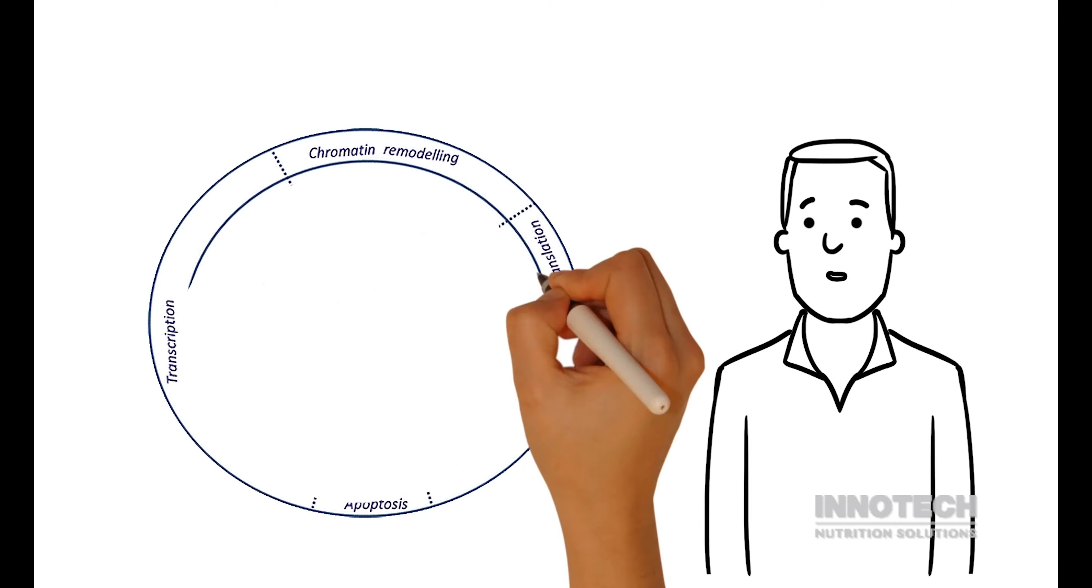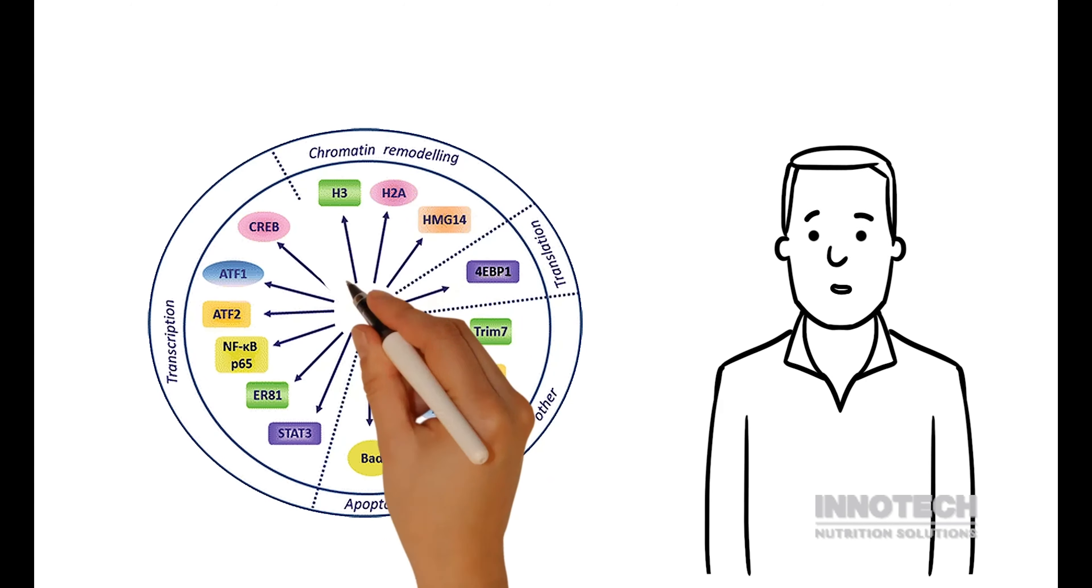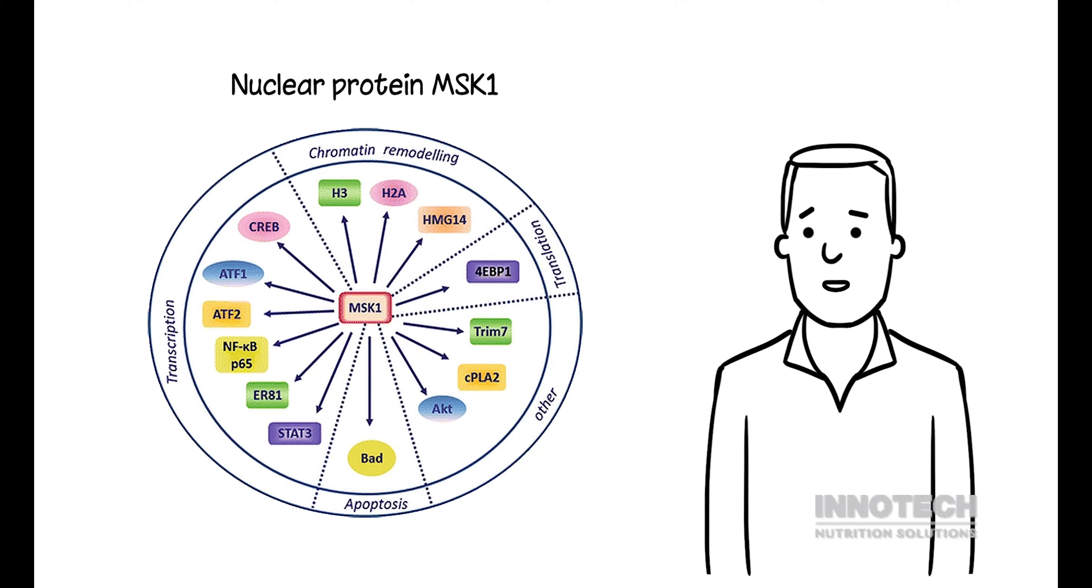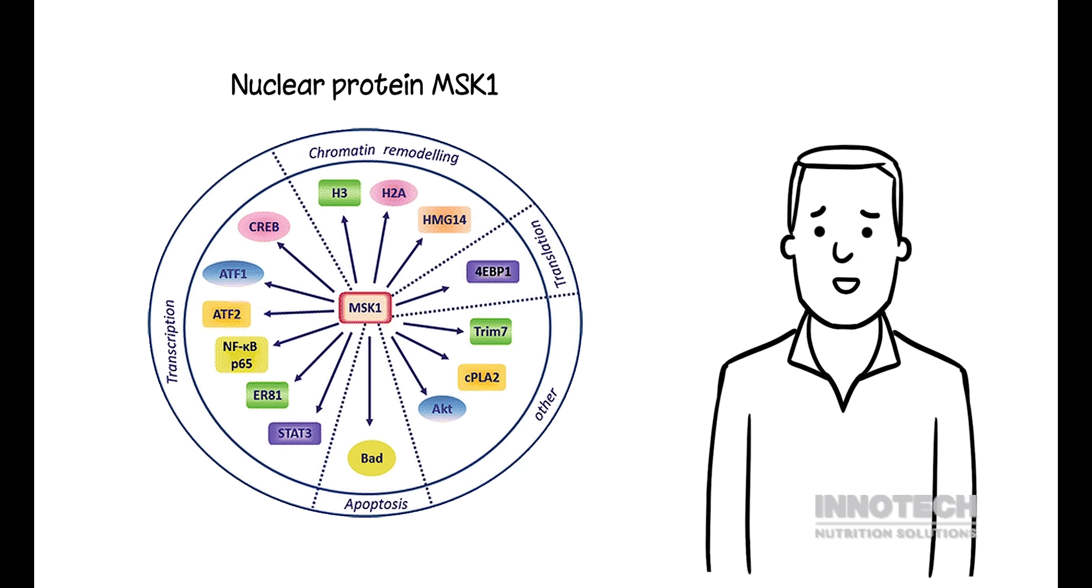Such a concentration level makes it possible to inhibit the activity of the nuclear protein MSK1, whose unnaturally escalated activity is a cause of uncontrolled inflammation.